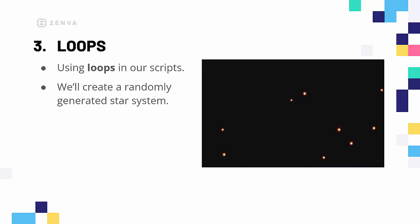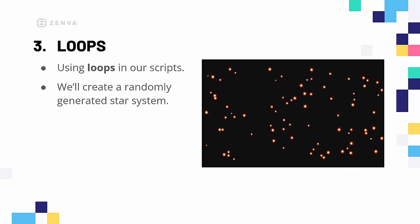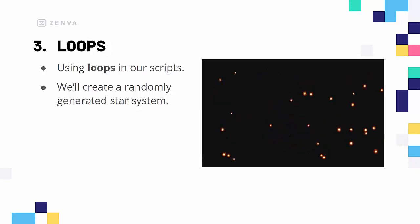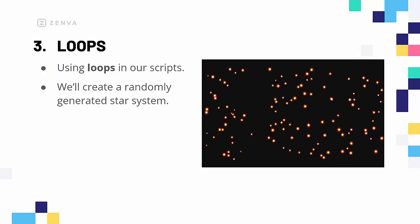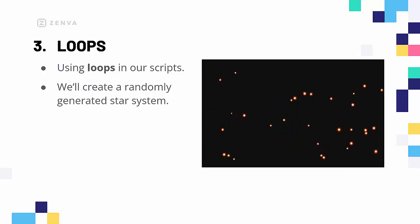Hey everyone, in this lesson we are going to be creating our third mini project, which is based around loops. In this project, we are going to be learning about loops, what they are and how we can use them inside of our games. Using that knowledge, we are going to be creating a star system that gets randomly generated in position and size. Now let's hop over into Godot and have a look at how we can start.